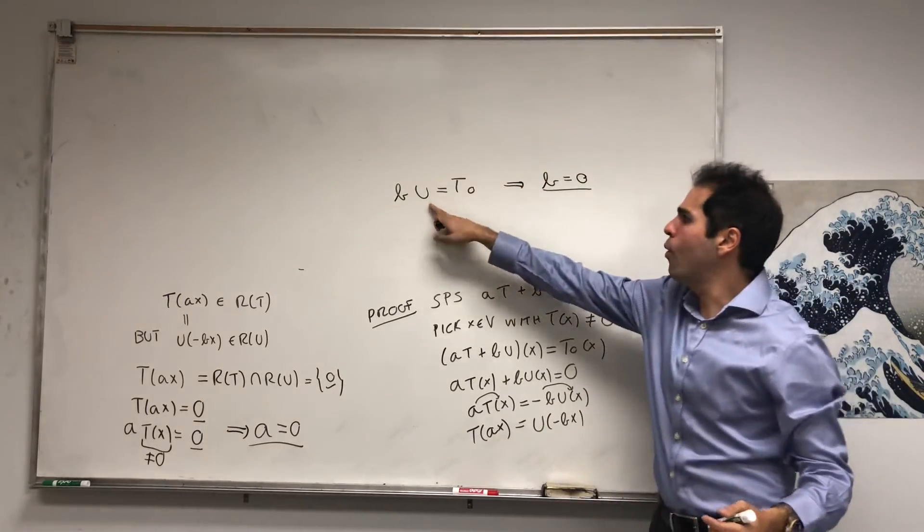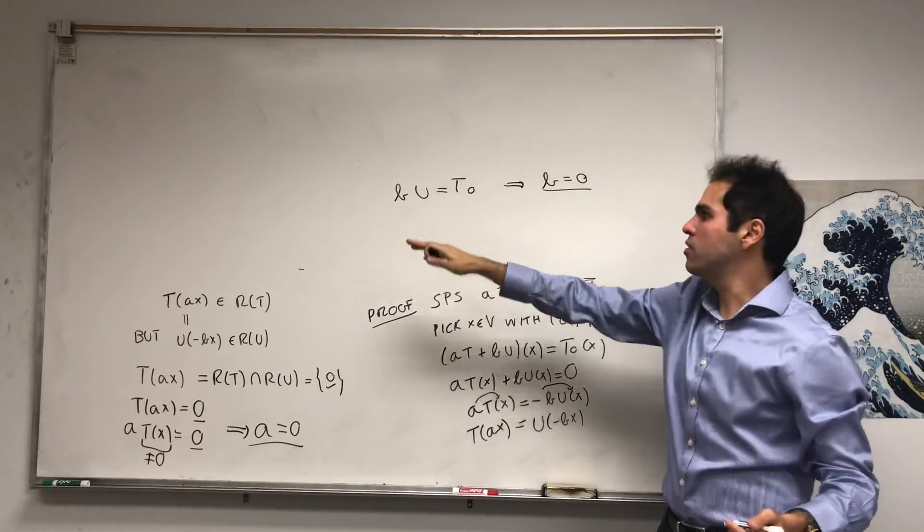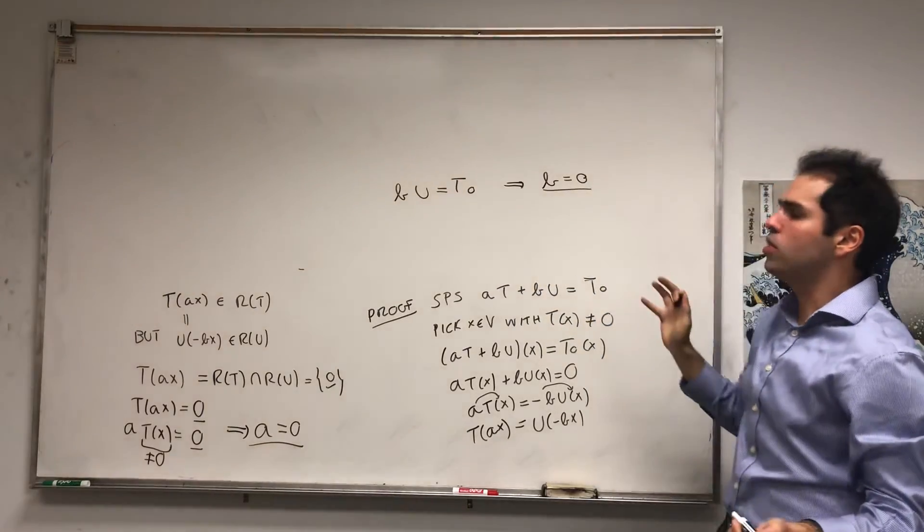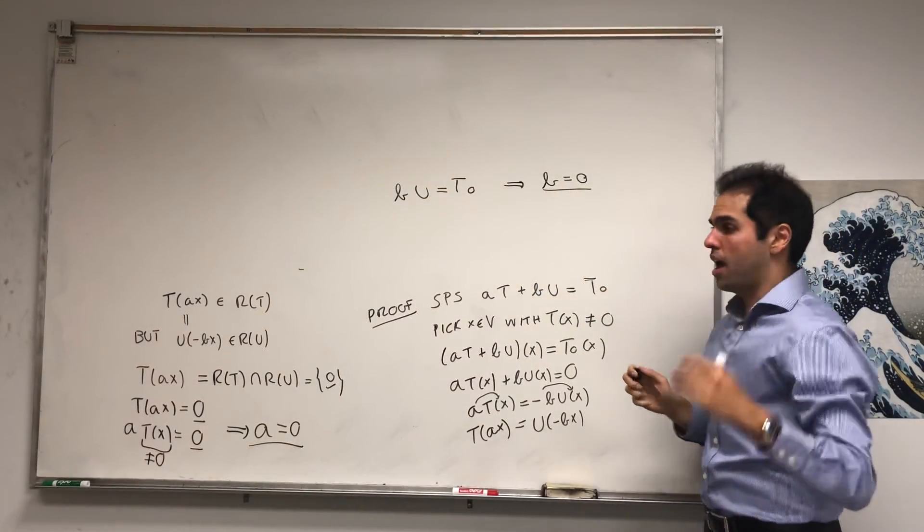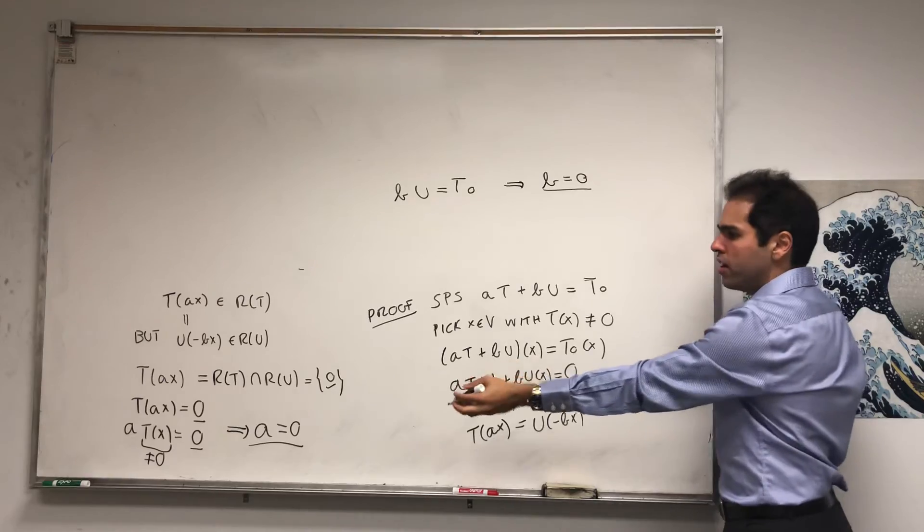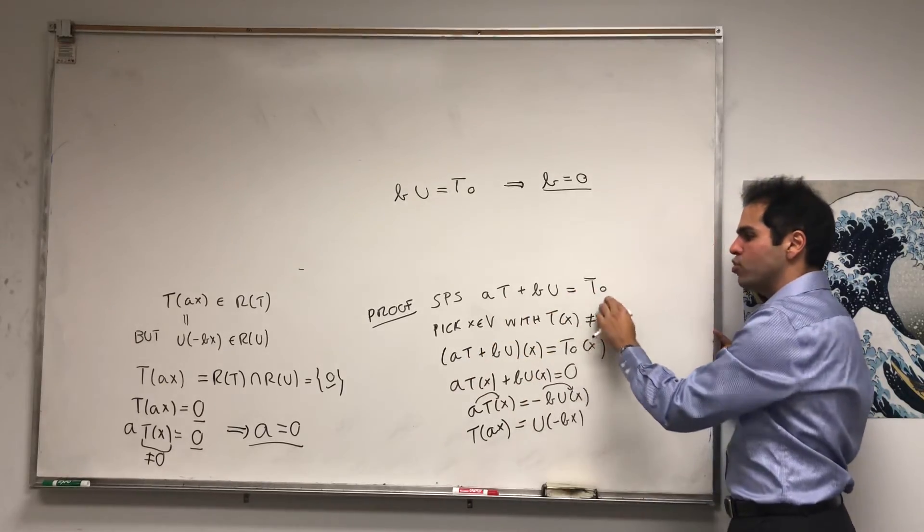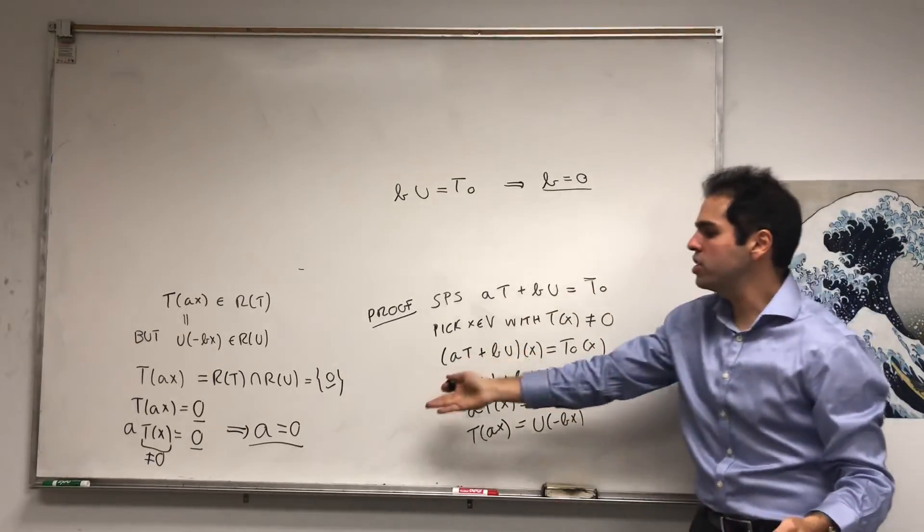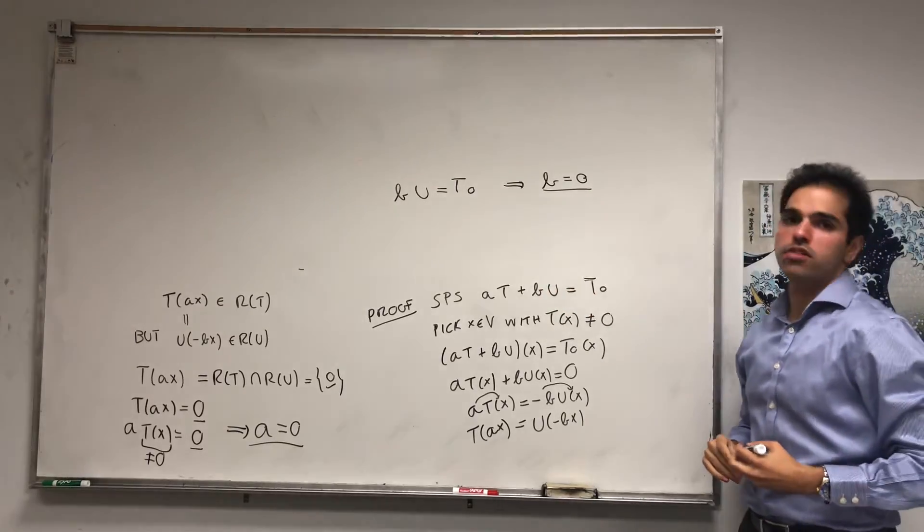If you want to pick any Y where U is nonzero, then you get B*U equals zero, and then B has to be zero. And then we're done. We assumed some linear combination gives you the zero transformation, and we showed A and B are both zero.